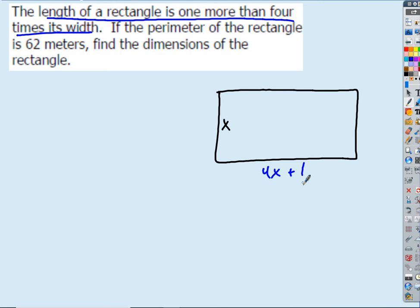Yeah, 4X plus 1, right? And now that I have the dimensions of that rectangle written in terms of a single variable, I can do whatever I want. I can come up with an expression for the area if I want to. I can come up with an expression for the perimeter. In this case, they want perimeter.